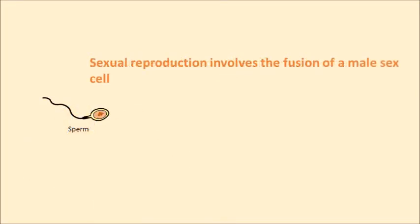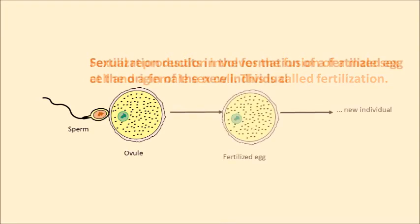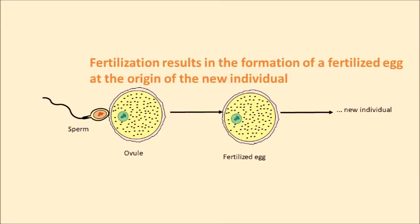Sexual reproduction involves the fusion of a male sex cell and a female sex cell. This is called fertilization. Fertilization results in the formation of a fertilized egg at the origin of the new individual.